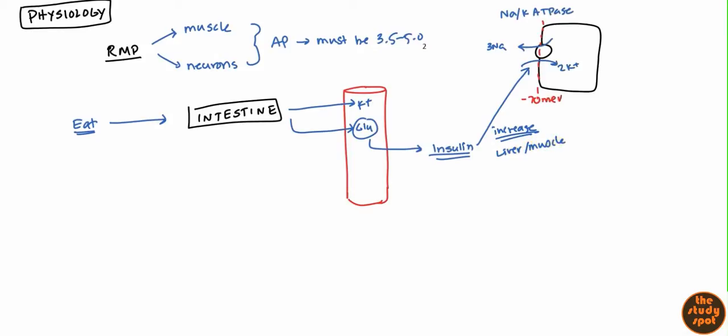Classically you think of insulin for glucose, but you should also add potassium — insulin does help manage potassium. The reason is you want to make sure potassium is maintained between 3.5 to 5.0. It's important that as soon as you eat, you push that potassium into the cell as soon as possible. So overall, insulin pushes potassium into the cell.